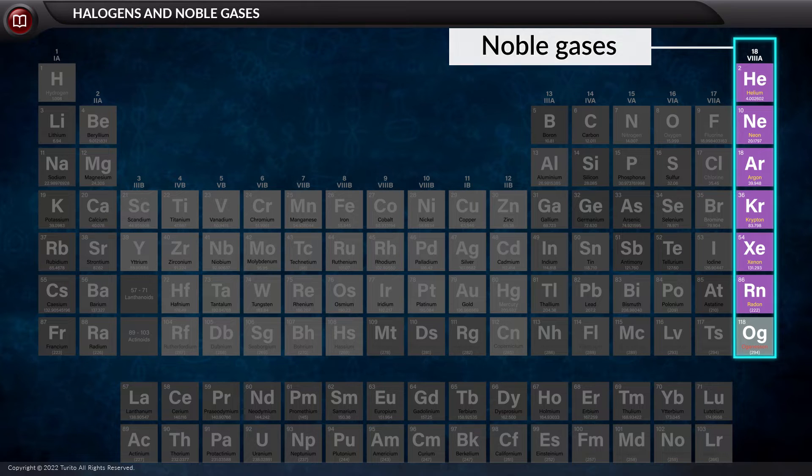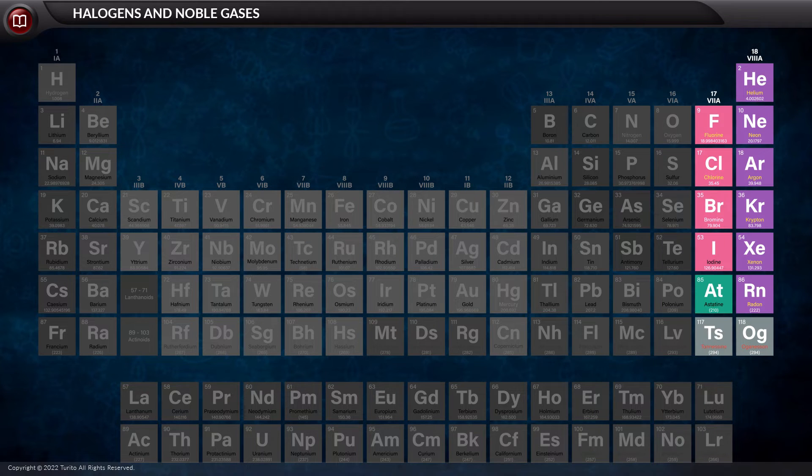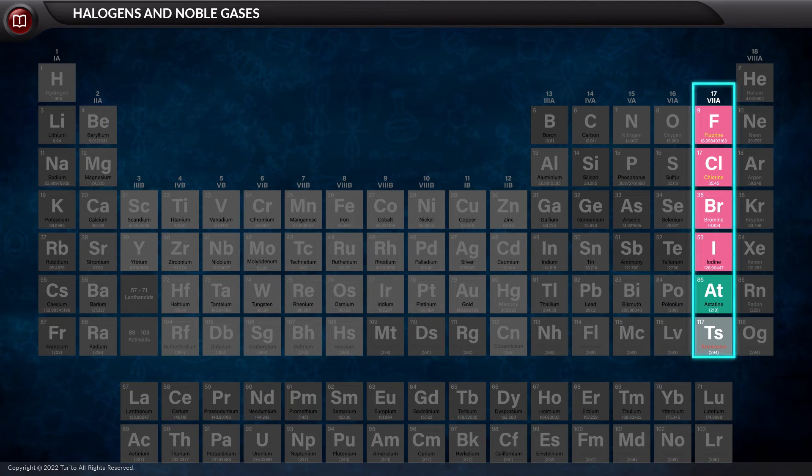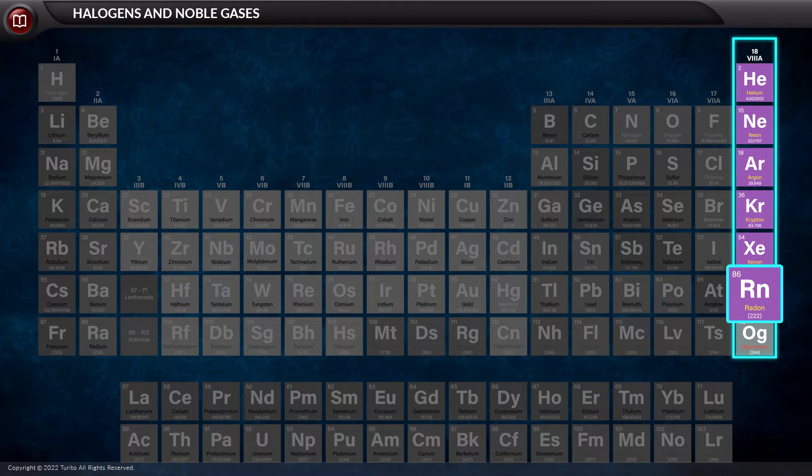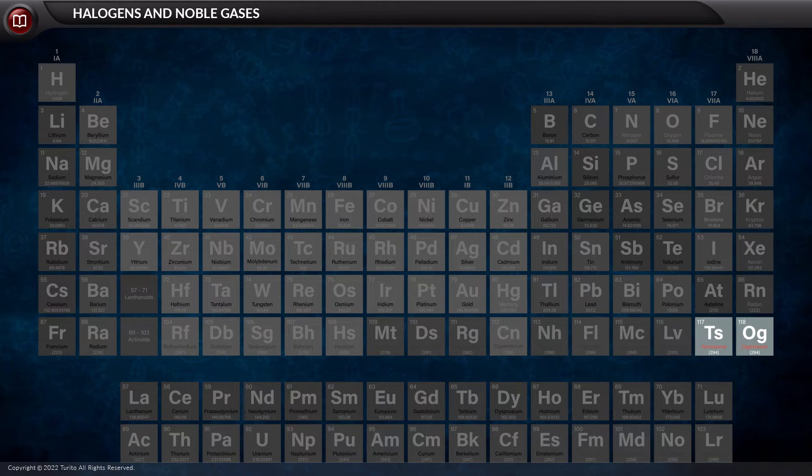Now let us call out the names of the halogens and of the noble gases. The halogens are fluorine, chlorine, bromine, iodine, and astatine. The noble gases are helium, neon, argon, krypton, xenon, and radon.